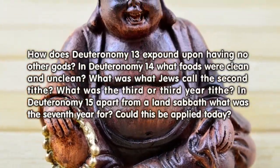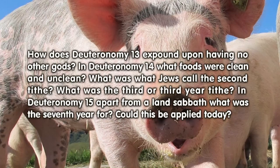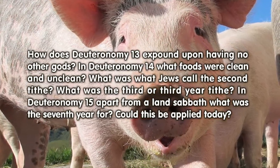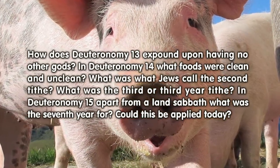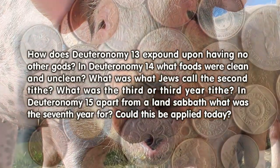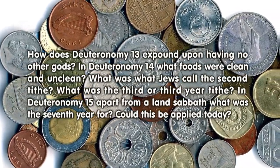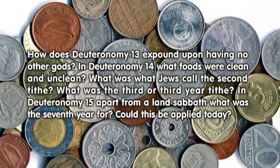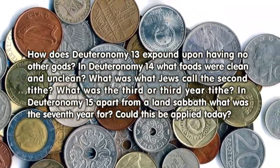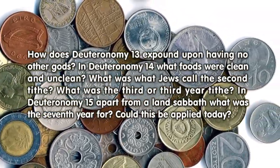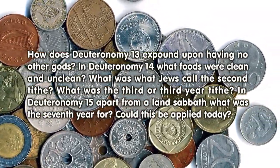In Deuteronomy 14, what foods were clean and unclean? What was what the Jews call the second tithe? What was the third, or third-year, tithe?